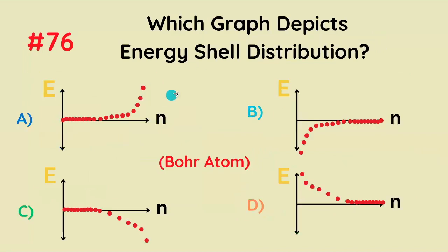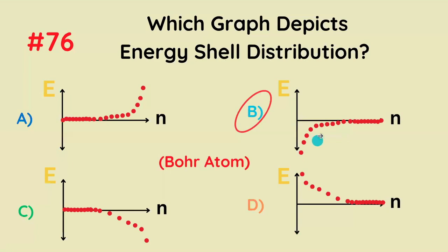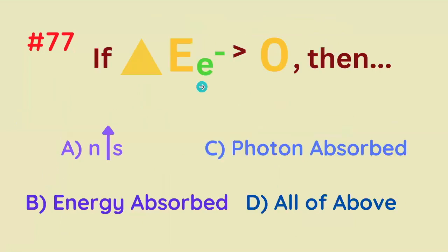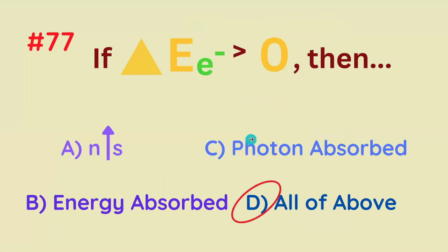Which graph depicts energy shell distribution? The correct answer is B — it increases as discrete dots, and the increase gets smaller and smaller as N gets greater. If the change in energy of the electron is greater than zero, then what happens? It's all of the above: N increases, energy is absorbed, and a photon is absorbed.